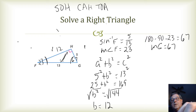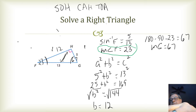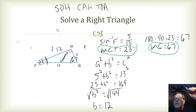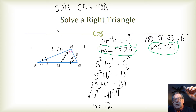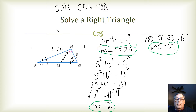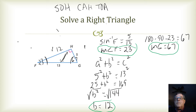Using the inverse trigonometric ratio, we found the measure of angle F. Using the triangle angle sum theorem, we found the measure of angle G. And using the Pythagorean theorem, we found side FH, which was 12 — all based off the inverse sine function that got us started.